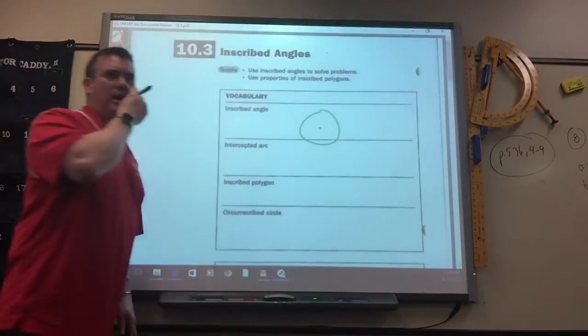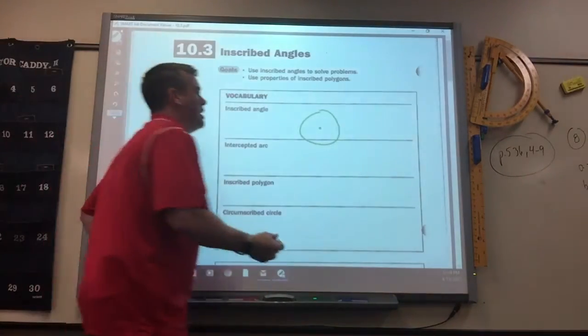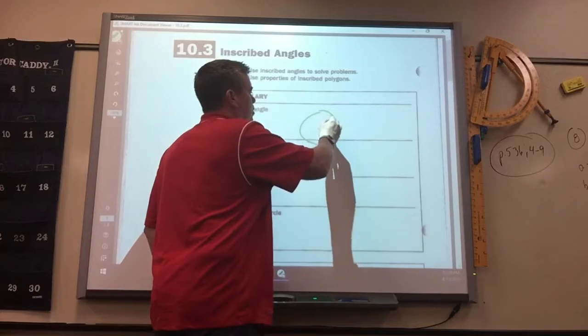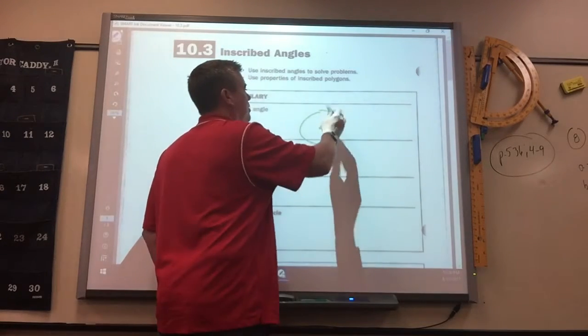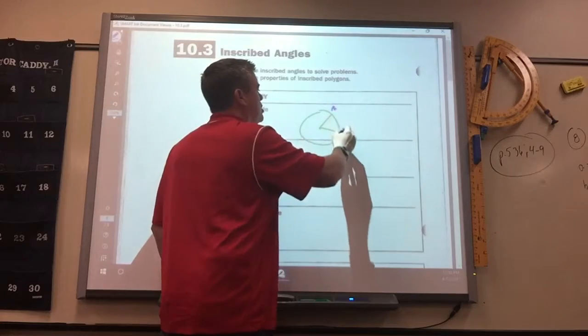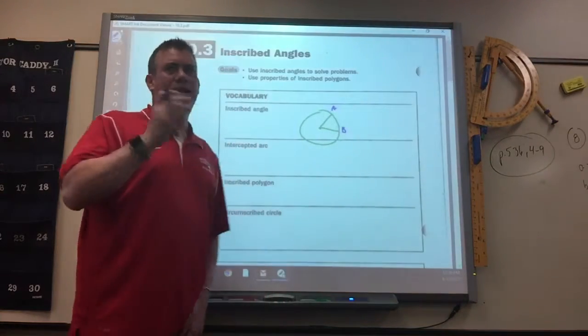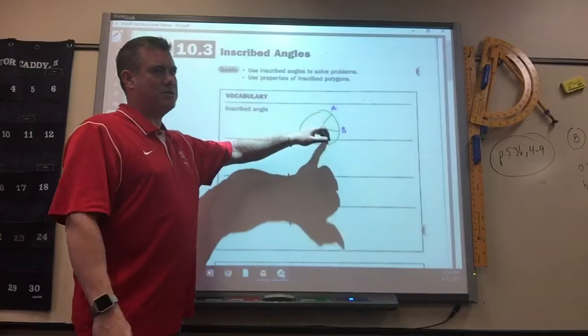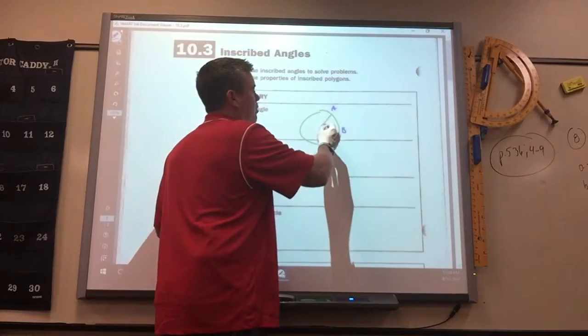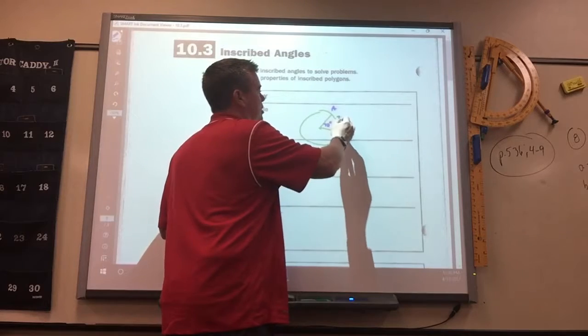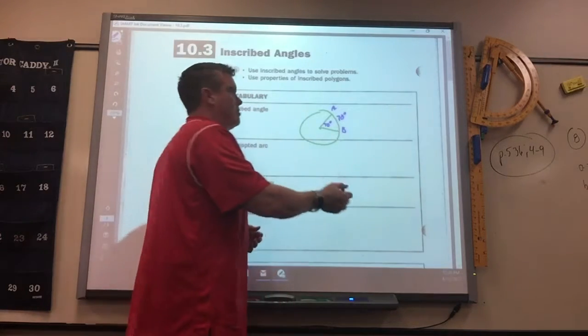Okay, now I already kind of showed you this. We did the ones with a central angle. So this central angle is just made up of two radiuses or radii. It forms an angle, and whatever the angle is, that's also the arc angle, right? Remember that?